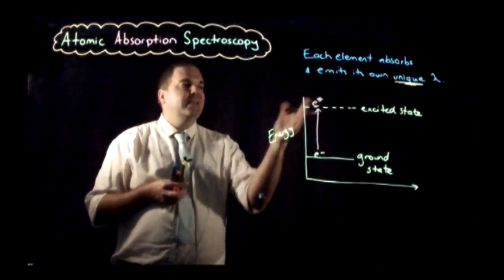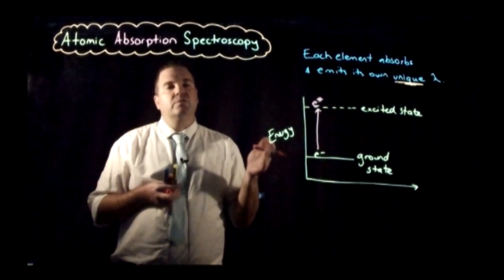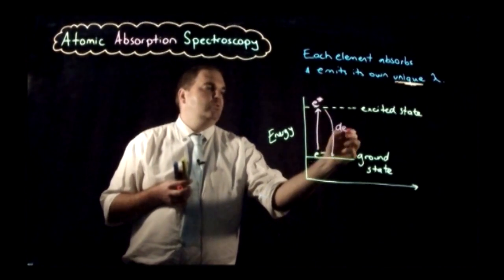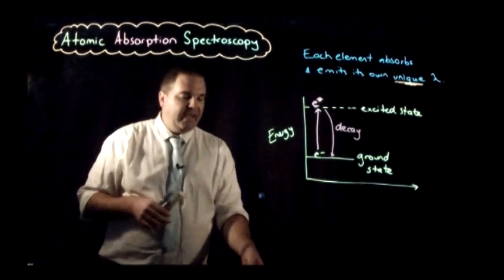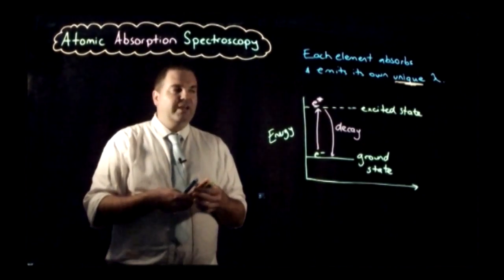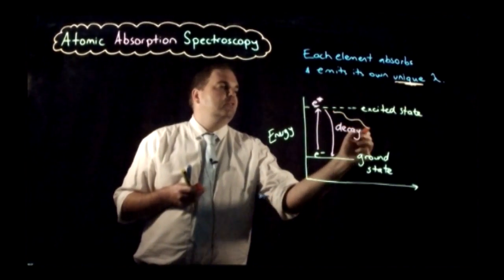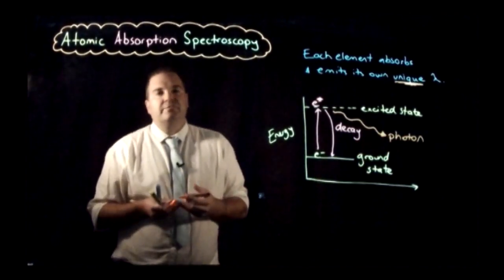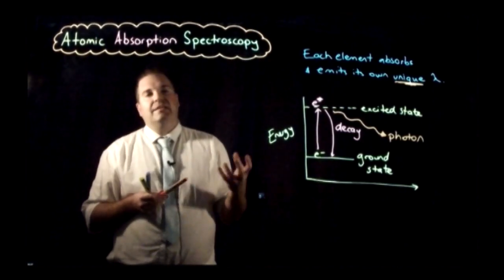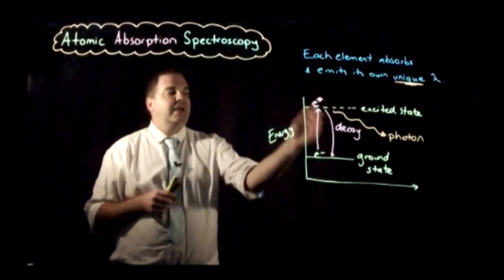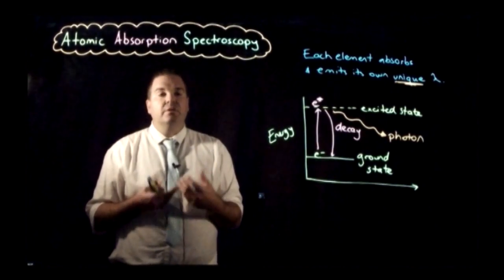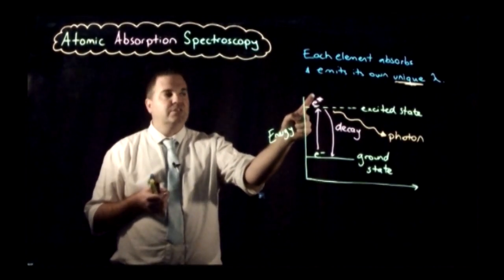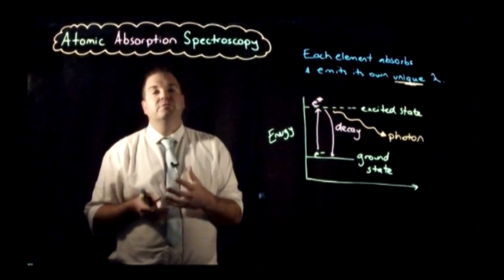That electron does not want to stay in the excited state, so it's going to decay back to its original state. That decay of energy can only happen if it gets rid of some form of energy, so it releases energy in the form of a photon. A photon is related to visible light, so we can see the energy being given off by the electron when it decays back. Each element absorbs and emits its own unique wavelength.